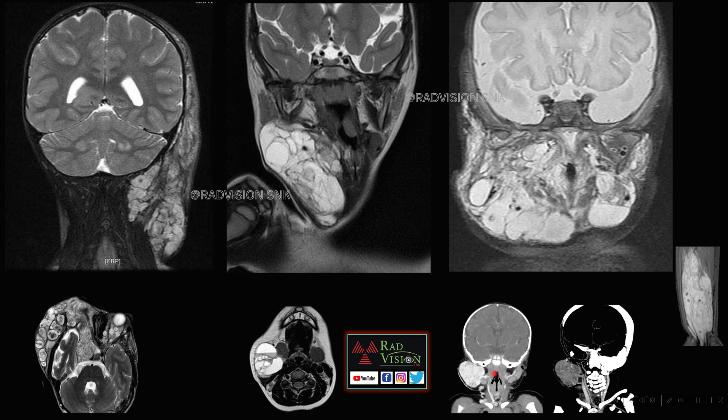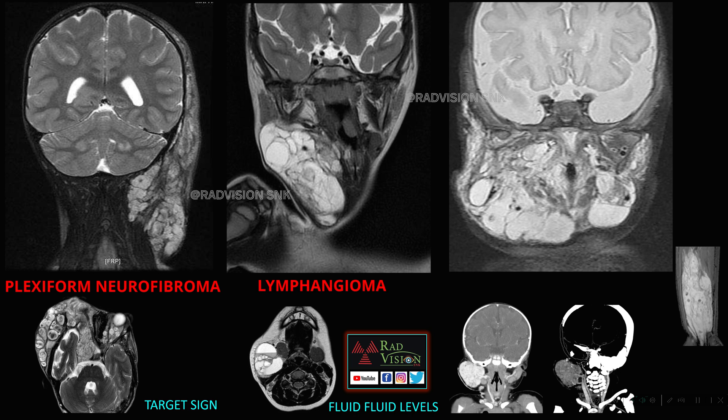Sometimes a feeding vessel can also be seen in hemangioma. To summarize: the first is plexiform neurofibroma with target sign, the second is lymphangioma with fluid-fluid levels, and the third is hemangioma with flow voids, phleboliths, and feeding vessels. These are three common cystic lesions in the neck or soft tissues to remember.